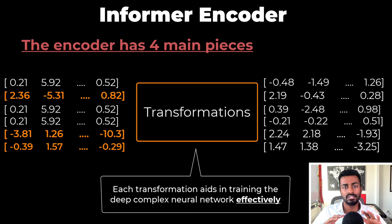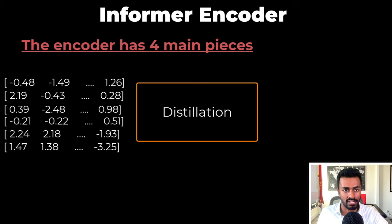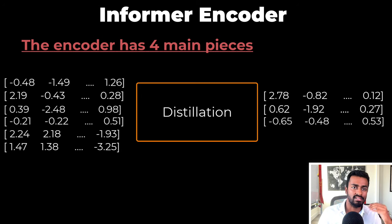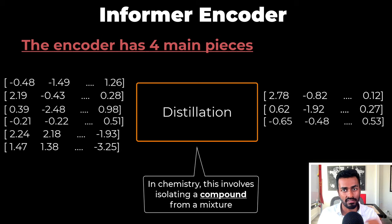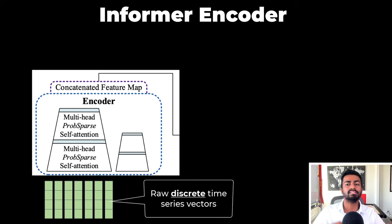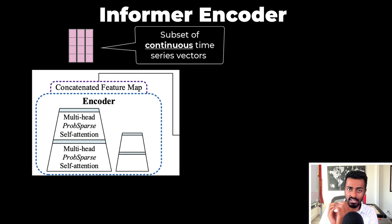Each of these transformations will aid in training this deep, complex neural network effectively. In part four — the distillation operation — the active vectors and lazy vectors are highlighted as input. Once distillation is complete, we only fetch the active vectors along with some transformations. Distillation in chemistry involves isolating a compound from a mixture, and distillation here is isolating active vectors from the rest. With these four pieces together, the encoder converts raw discrete time series vectors into a subset of continuous time series vectors that have richer information.